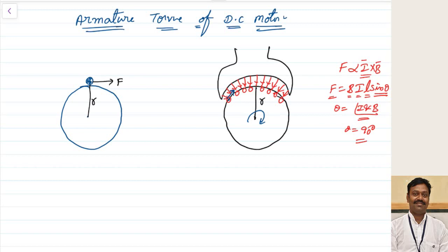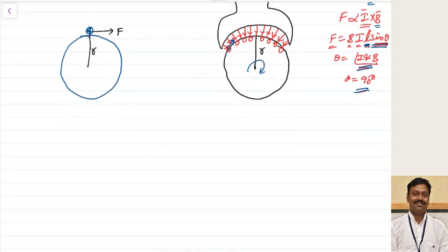We have seen that the force produced in a DC motor is given by force is proportional to I cross B, where I is the current passing through the conductor and B is the flux density. The force is given by B into I into L, where L is the effective length of the conductor, and sine of the angle between the current and the magnetic field. In order to produce the maximum force, the angle theta should be equal to 90 degrees. To keep theta equal to 90 degrees, the flux must be kept such that the direction of the force produced will be tangent at the point, making both force and torque maximum.